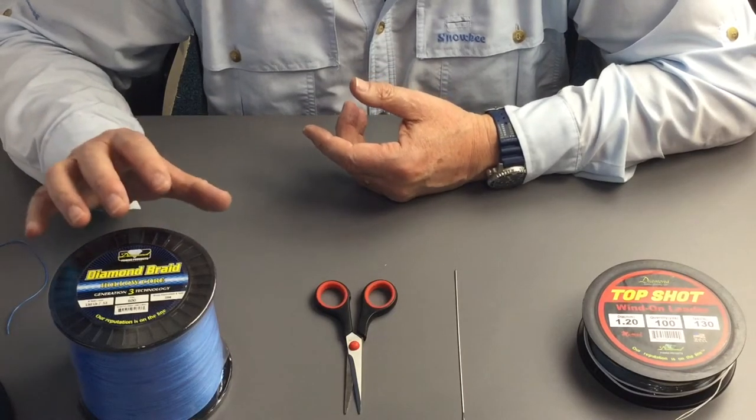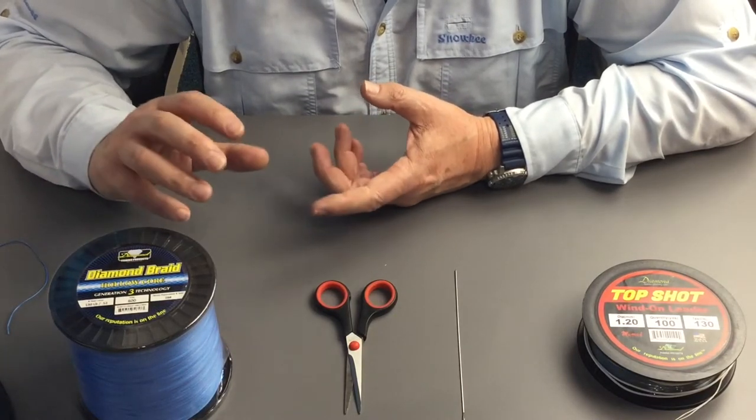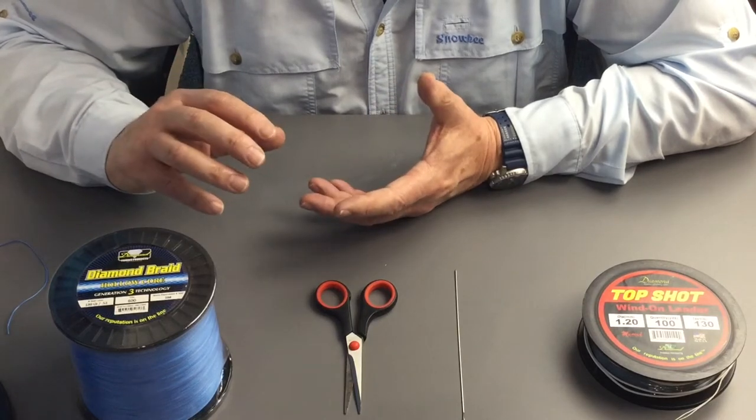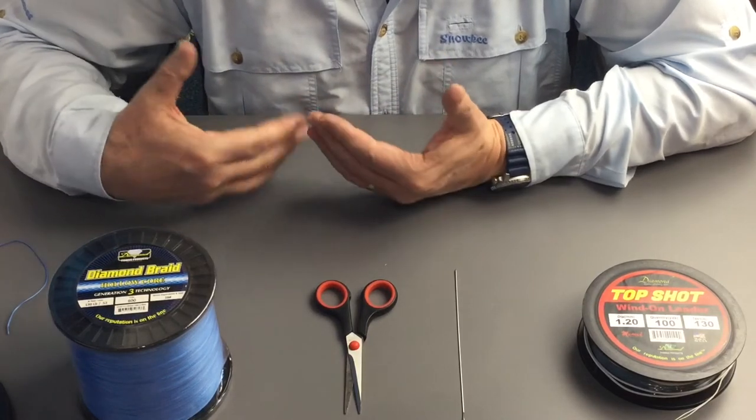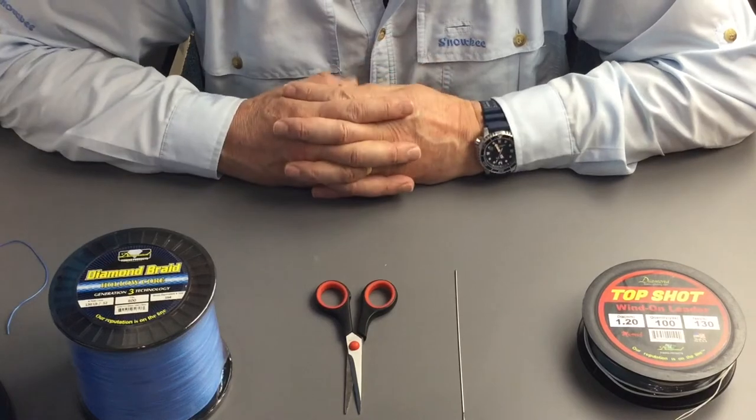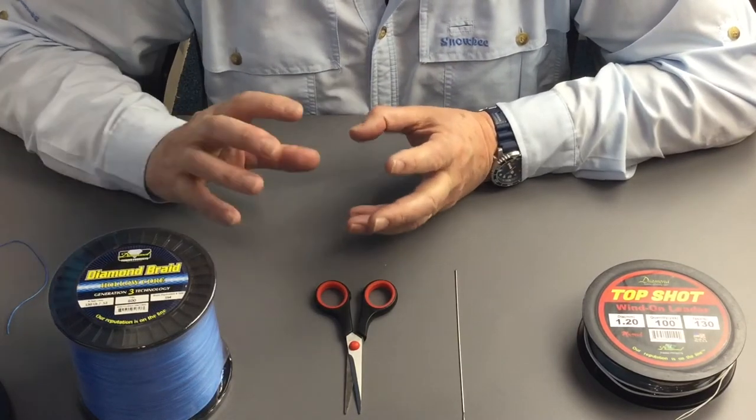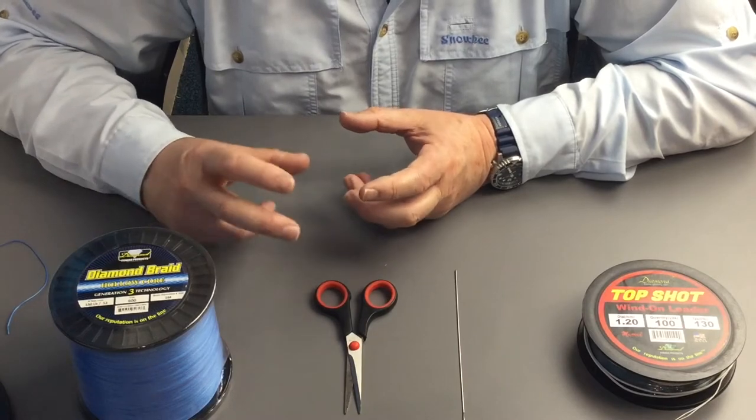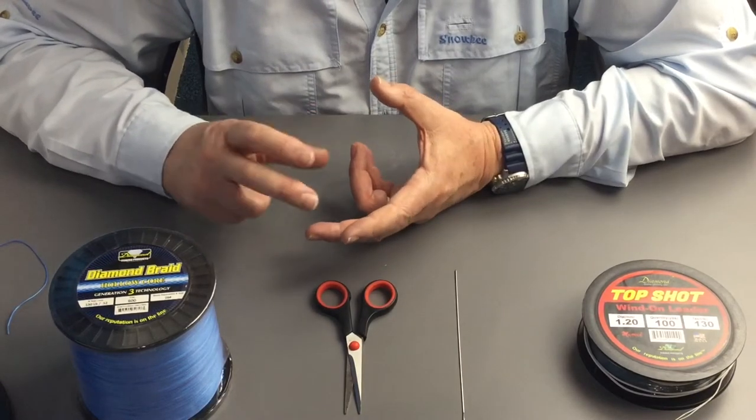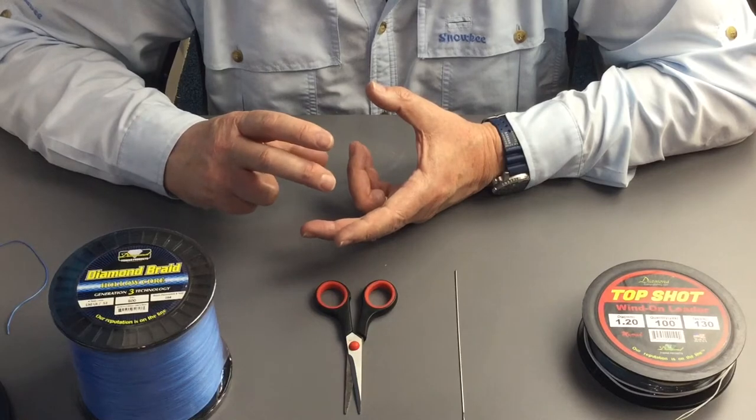You want to make sure that the hollow core is loaded on under as much pressure as you can comfortably wind it onto the reel with. When you've loaded it onto the reel, if you give the hollow core on the spool a little squeeze, if it's spongy...